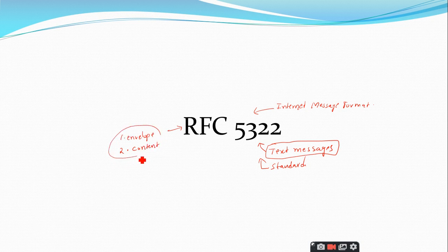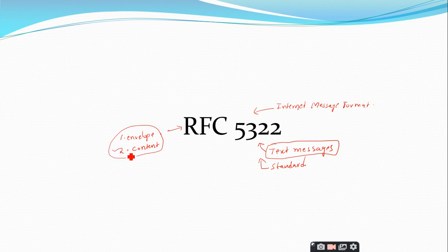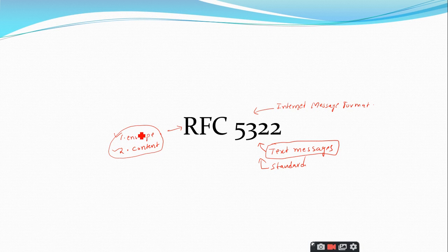This is similar to sending a normal postal letter. You write content on paper, fold it, and put it inside an envelope. On the envelope you write the destination address. The envelope acts like a postman — it delivers the content to your friend based on the destination address. The same concept is implemented in RFC 5322.